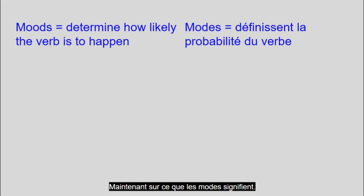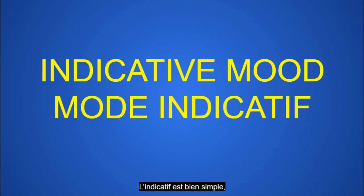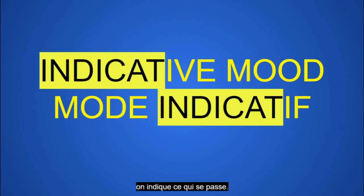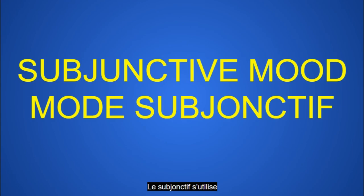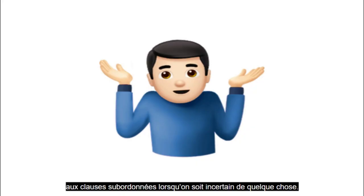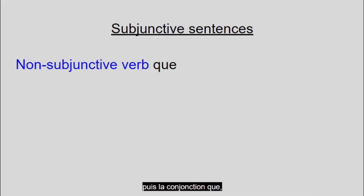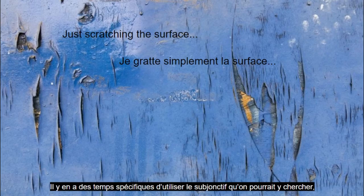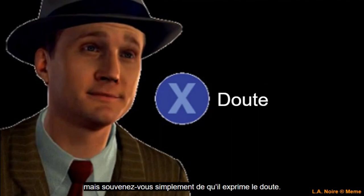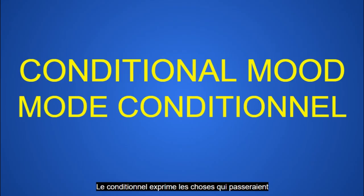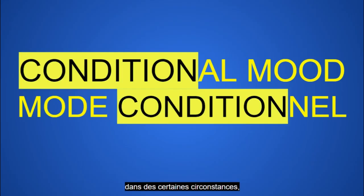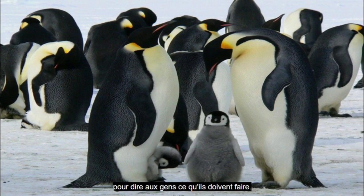Now about what the moods mean. The indicative is pretty straightforward — you're indicating what's happening. The subjunctive is used in subordinate clauses when you're unsure of something. Those sentences are formed with a verb in another mood, normally indicative, then the conjunction que, then the subjunctive verb. There are specific times to use the subjunctive you can look up, but just remember that it expresses doubt. The conditional expresses things that would happen under certain conditions — i.e. the 'would' tense — and the imperative is used to tell people what to do.